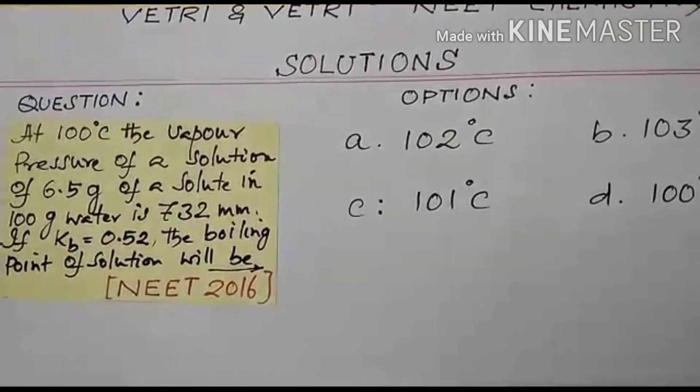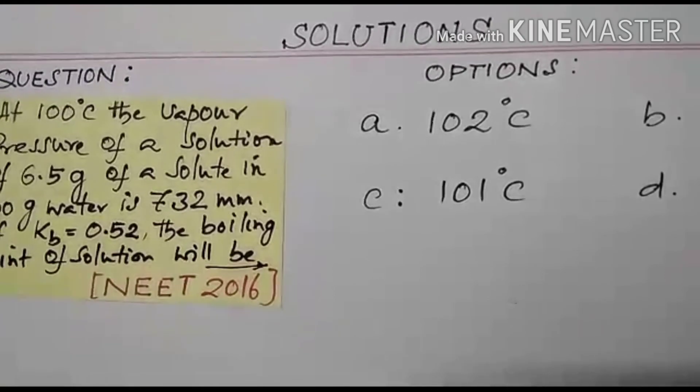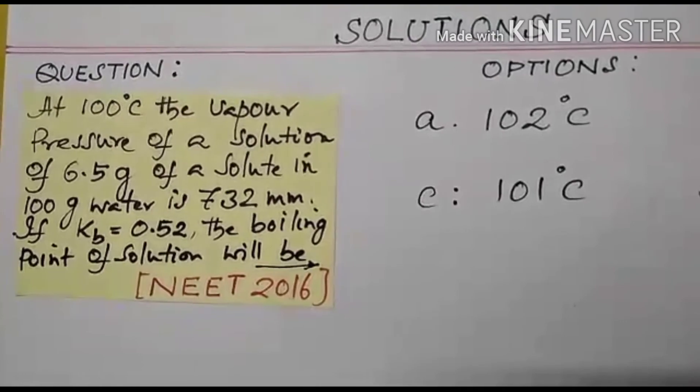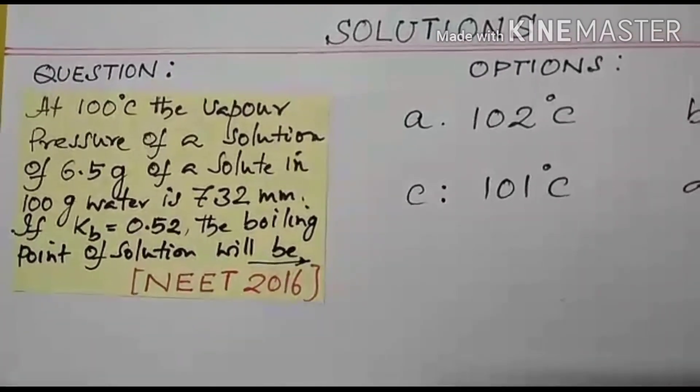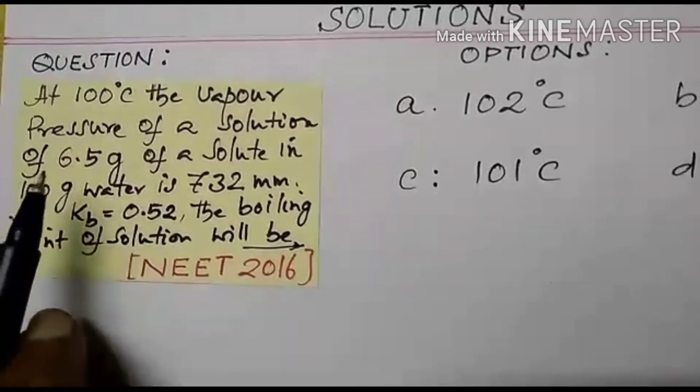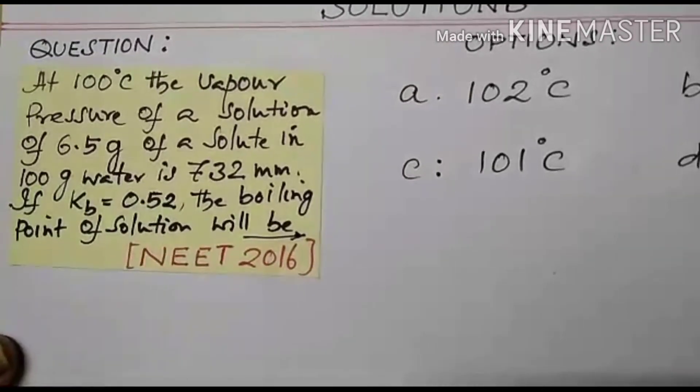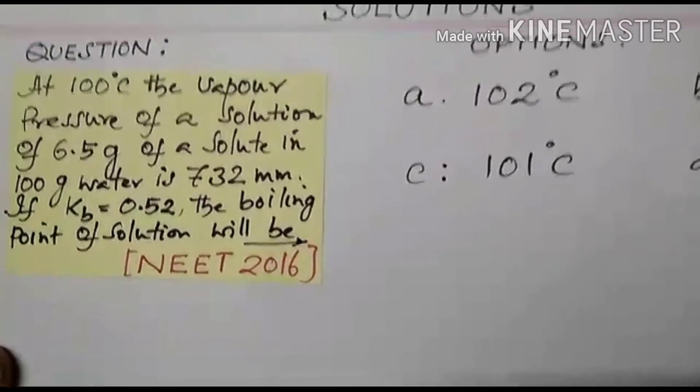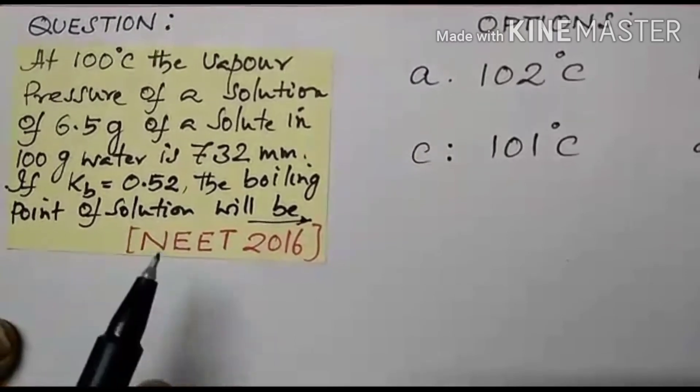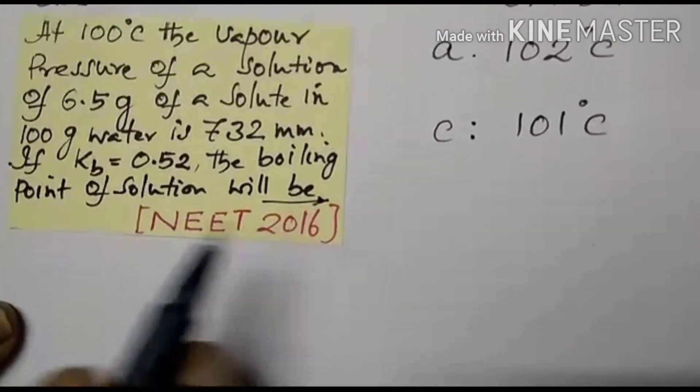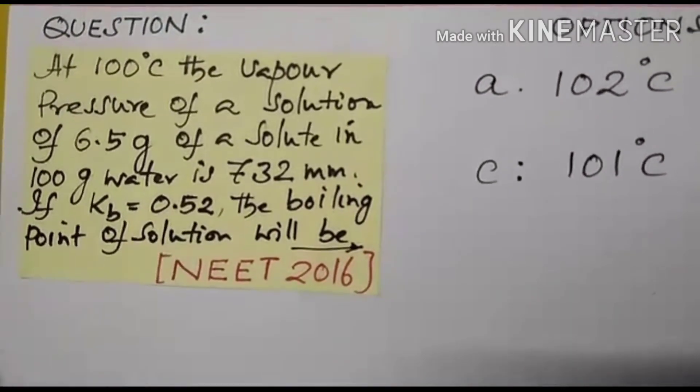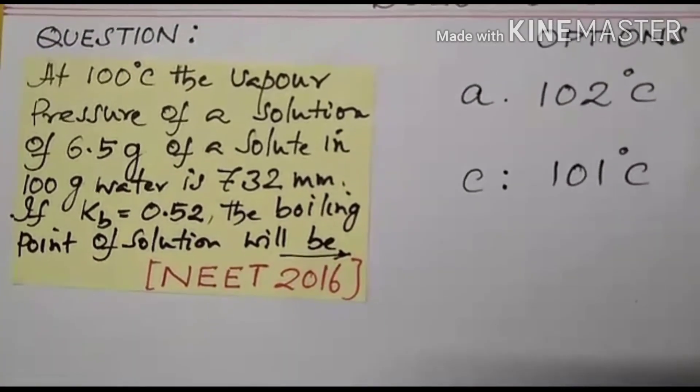Now let us go to the class. Today's class is solution. The topic is belonging to plus 2 physical chemistry. Now every physical chemistry lesson, you have to practice the problems. Let us see the question now. At 100 degree centigrade, the vapor pressure of a solution of 6.5 gram of a solute in 100 gram of water is 732 millimeter. If Kb is equal to 0.52, the boiling point of the solution will be.